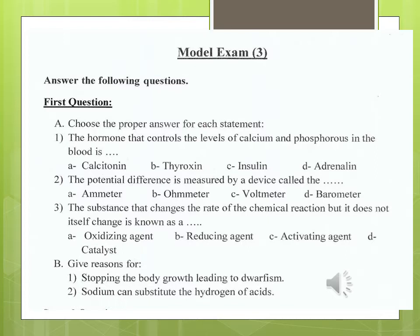Sodium can substitute hydrogen of acid because sodium is chemically more active than hydrogen and sodium comes before hydrogen in chemical activity series.